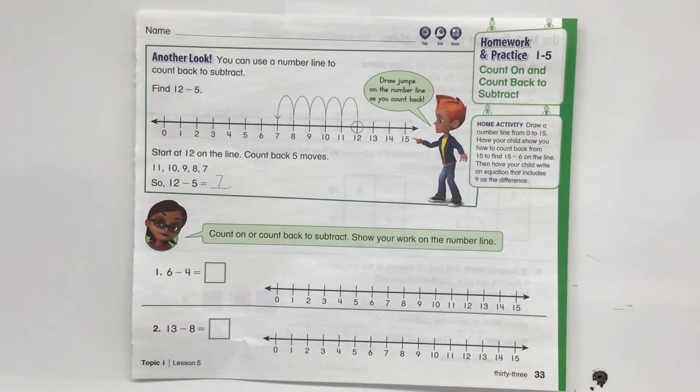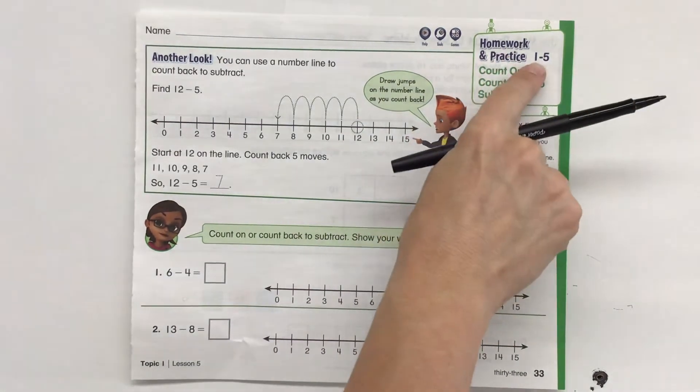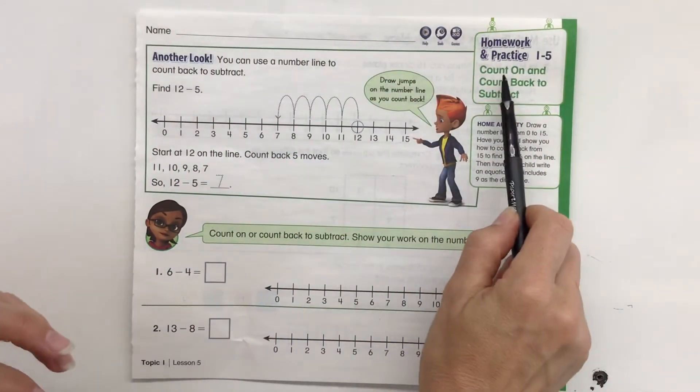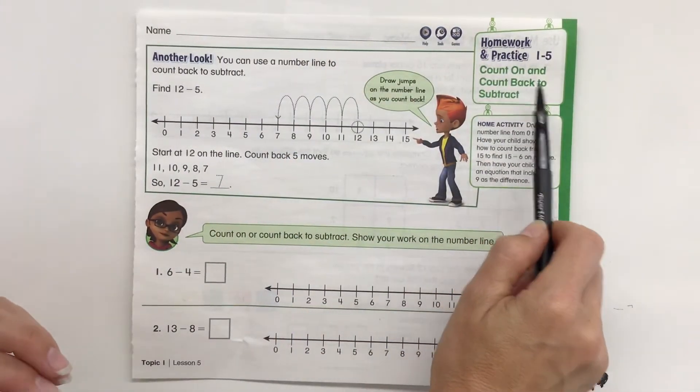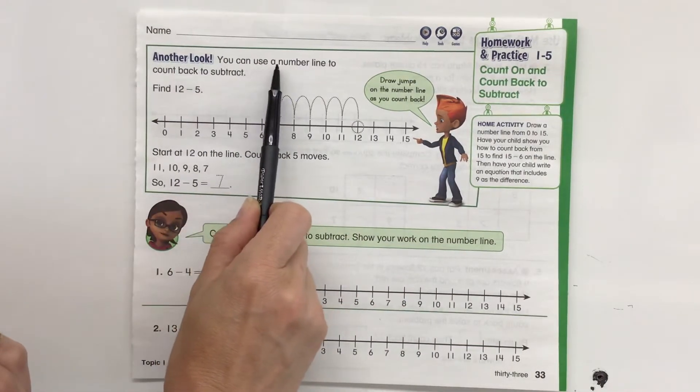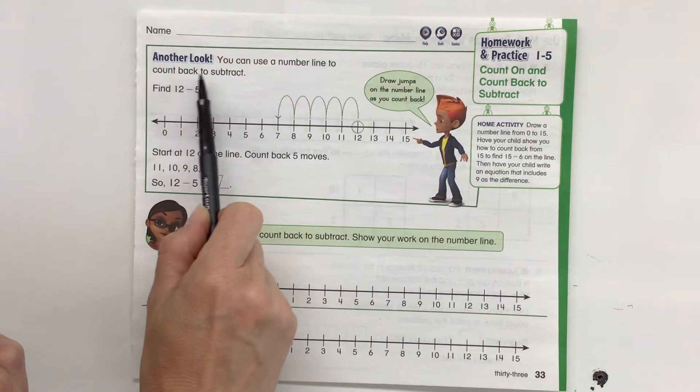All right, this is our second grade math homework practice for lesson 1-5. We're just reviewing the lesson that we had earlier, counting on and counting back to subtract. So here's another look. You can use a number line to count back to subtract.